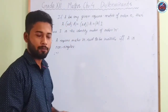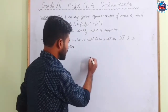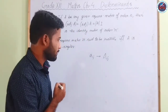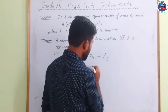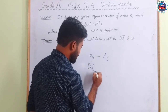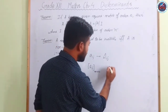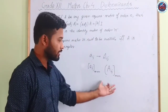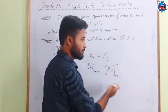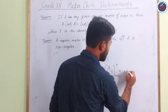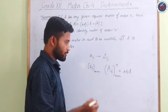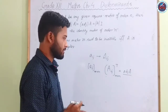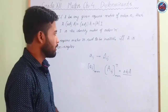In the previous video we came across minors and cofactors. If we have an element a_ij, its cofactor is given by capital A_ij. Now if the matrix is an m×n matrix, the matrix formed by the cofactors is another matrix, and if we take the transpose of this cofactor matrix, we get the adjoint of matrix A, denoted as adj(A).